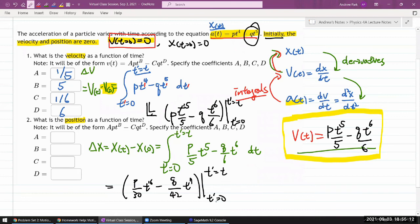And again, the lower limit will just give you zeros. So I'm just going to plug in the upper limit and look at what I get with that. So that's going to be p divided by 30, t to the sixth power minus q divided by 42, t to the seventh power.